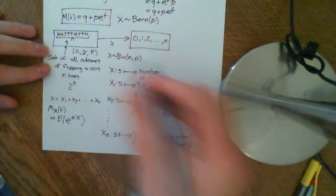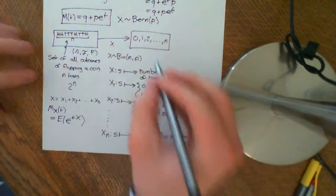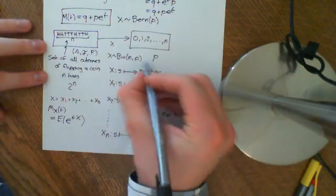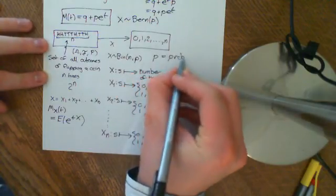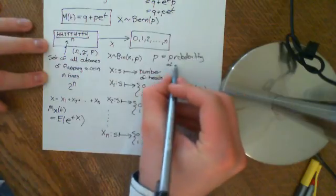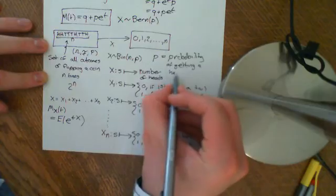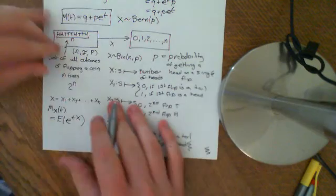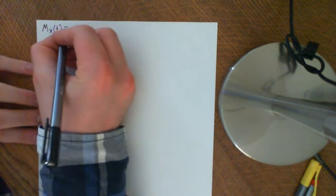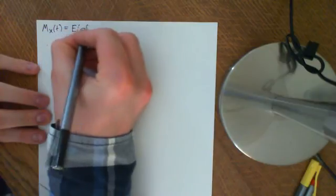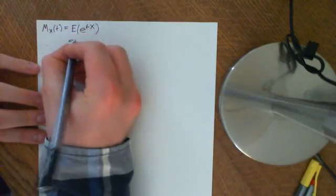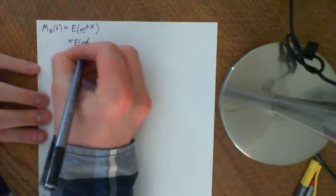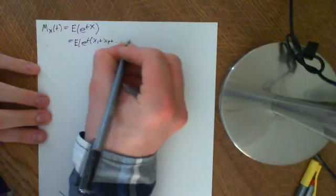We should note that p — little p — equals the probability of getting a head on an individual flip, on a single toss. So now, the moment generating function of X as a function of t is the expected value of e^(t(X1+X2+...+Xn)).